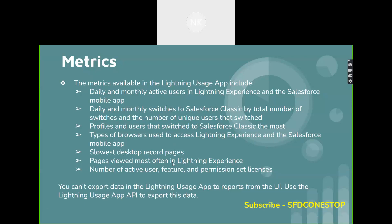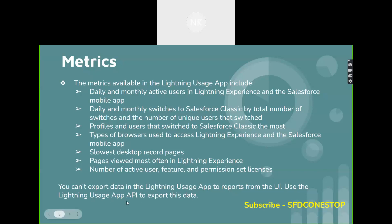You can also know which pages are viewed most by your users in the Lightning Experience. The number of active user feature permissions and licenses can also be viewed using the Lightning Usage App. One important thing to remember is that you cannot export the data directly in the Lightning Usage App — you need to use the Lightning Usage App API to export this data.